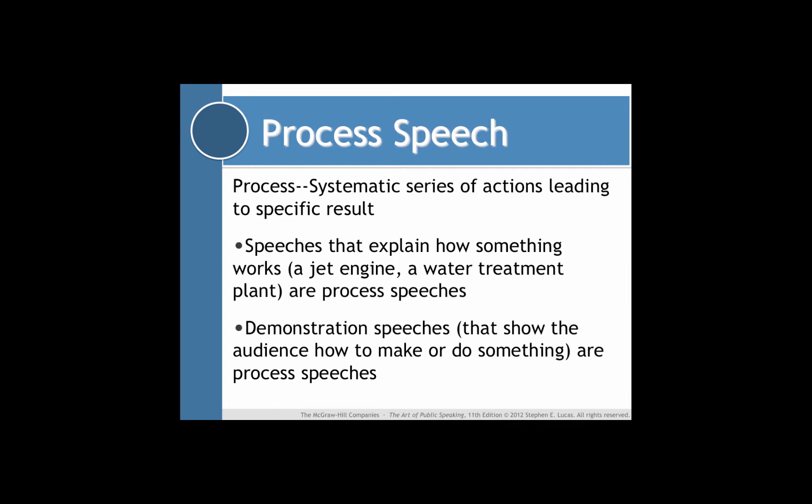The type of informative speaking that you will be doing in this class is called a process speech. A process is a series of actions that leads to a specific result. If you explain to the audience how a jet engine works to fly a plane, or how a water treatment plant works to make our water safe to drink, then you are explaining a process. However, what you'll be doing is a kind of process speech called a demonstration speech. In this kind of speech, you actually go beyond simply explaining and show us how something works, or how to make it, or how to do something.